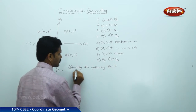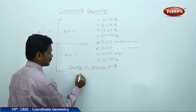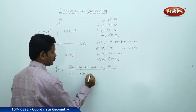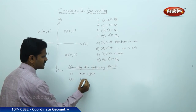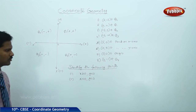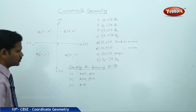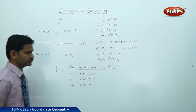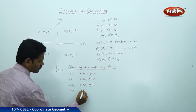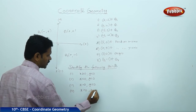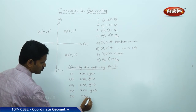Identify the following points: (1) x ≥ 0, y < 0. (2) x < 0, y < 0. (3) x = 0, y < 0. (4) x > 0, y = 0. (5) x > 0, y > 0.